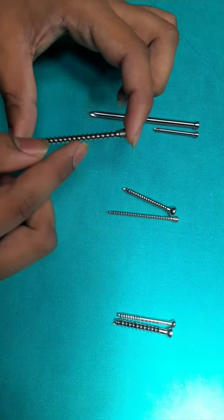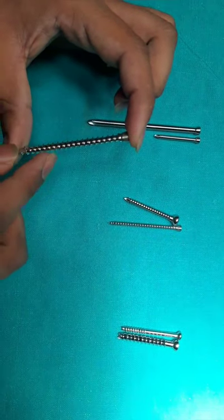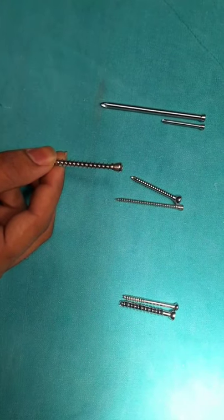The core diameter is less, the threads are larger, and the pitch is higher. This provides greater surface area for purchase and better fixation in cancellous bone.